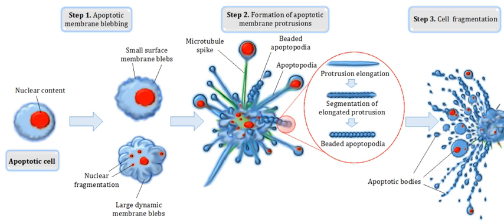Apoptosis refers to the demise of cells by a specific form of programmed cell death, characterized by a well-defined sequence of morphological changes. Cellular and nuclear shrinkage, chromatin condensation and fragmentation, formation of apoptotic bodies, and phagocytosis by neighboring cells characterize the main morphological changes in the apoptosis process. Extensive morphological and biochemical changes during apoptosis ensure that dying cells leave minimal impact on neighboring cells and tissues.